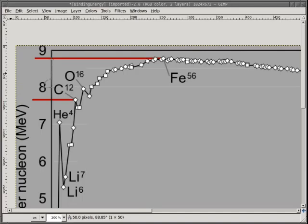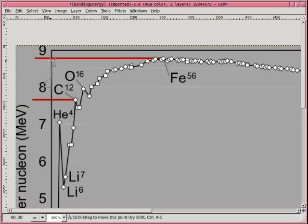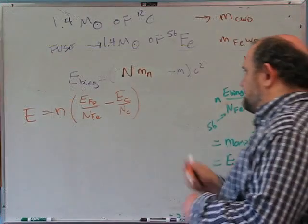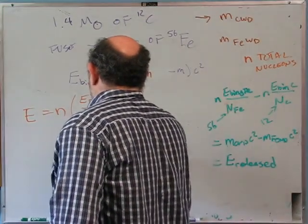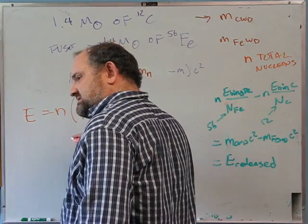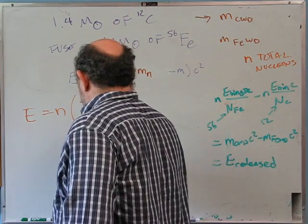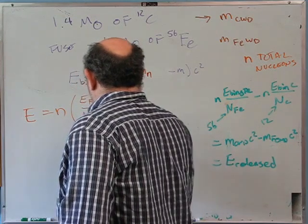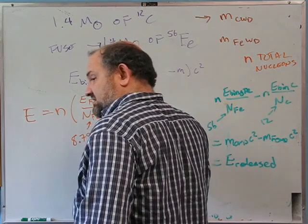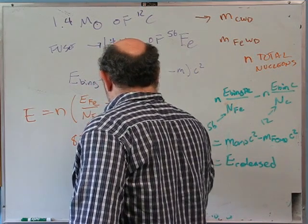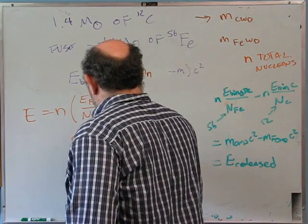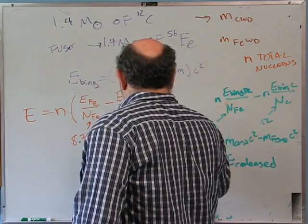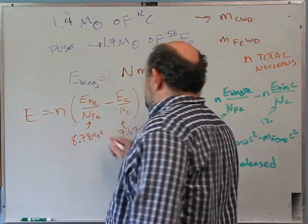So we have 7.67 and 8.78 MeV per nucleon — those are the two numbers we'll use. For iron: 8.78 MeV/nucleon; for carbon: 7.67 MeV/nucleon. What is N? We have 1.4 solar masses, so N = mass of total thing ÷ mass of one nucleon.